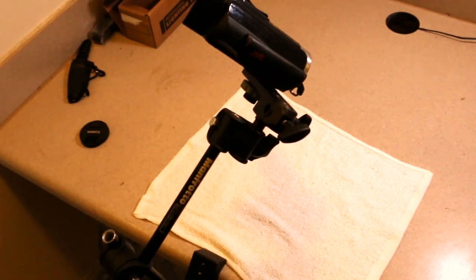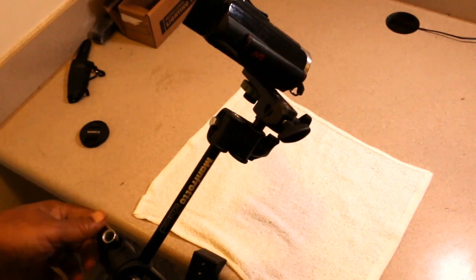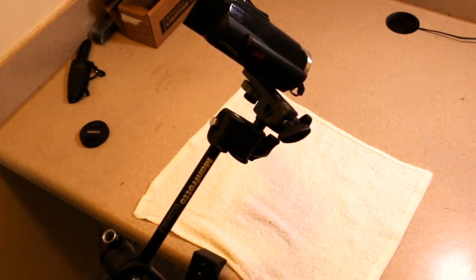So I just want to show you this - this is the Manfrotto, once again, 196B-2 143BKT. You don't need to remember all that. If you just know that it's 196B, this is the one that's specifically for point-and-shoots and light cameras. There's a much more heavily reinforced one that you would need if you're going to use full-size DSLRs.